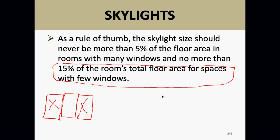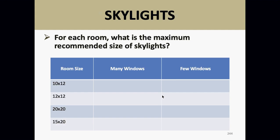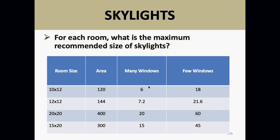The maximum recommendation is 5%. So for a 120 square foot room with many windows, that's 5% — for a room with few windows, 15%. In a room with many windows, you can have 6 square feet of skylight. With few windows, you can have 18 square feet of skylight.